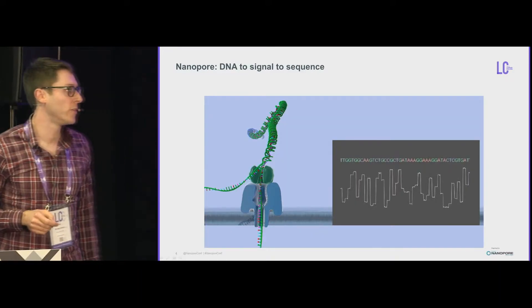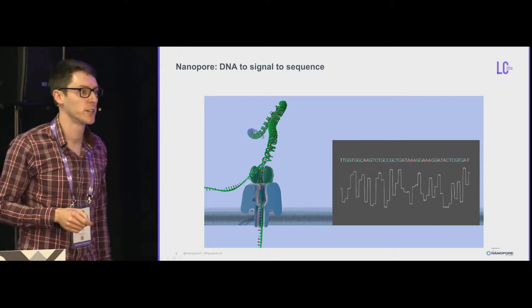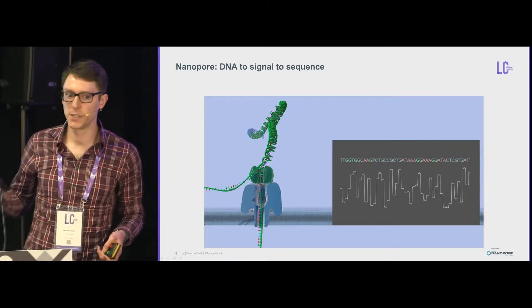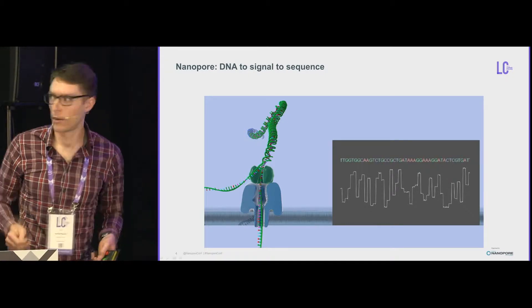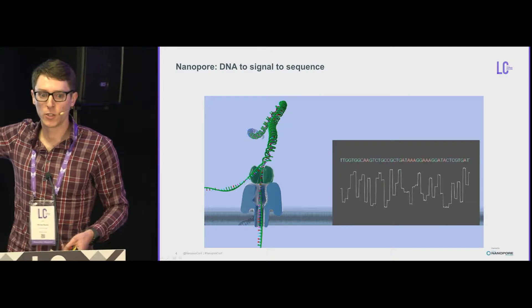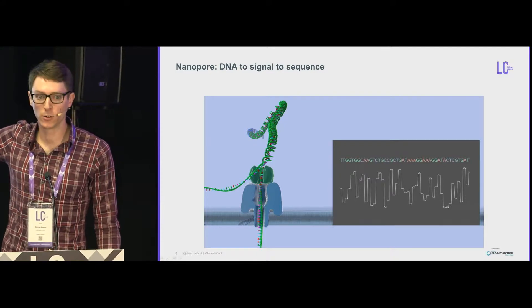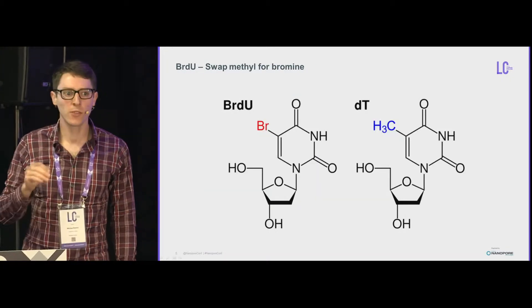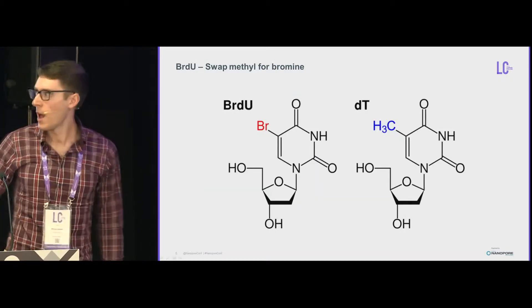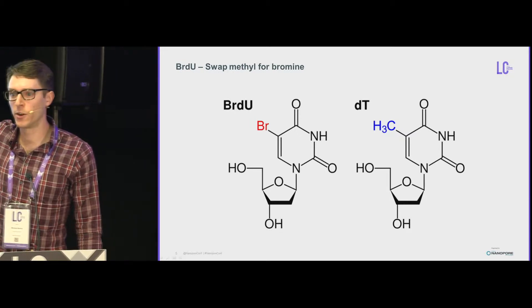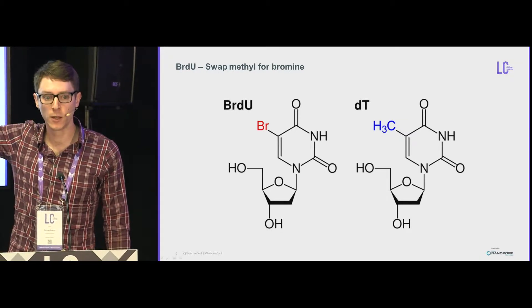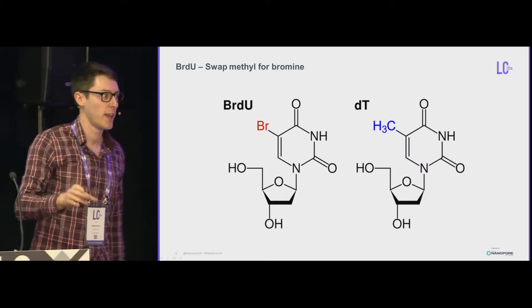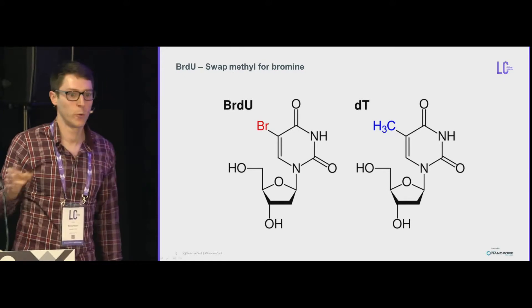Nanopore sequencing goes from DNA molecule to current signal to base calls. So we can look at these current signals and maybe find some information here. We hypothesized that if we take thymidine and swap out this rather inert methyl group for an electronegative halogen — BrdU — this might cause some disturbance in the nanopore current signal that we could detect.